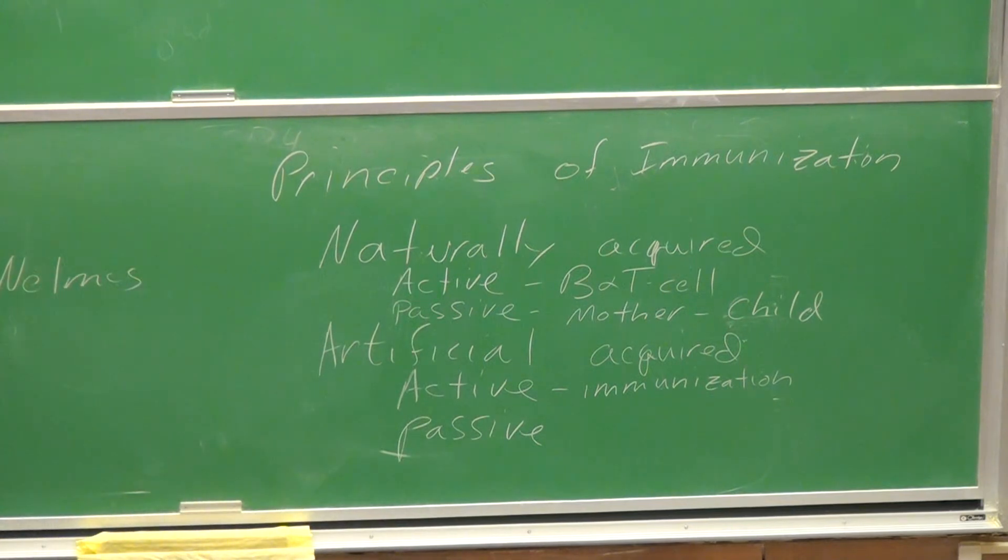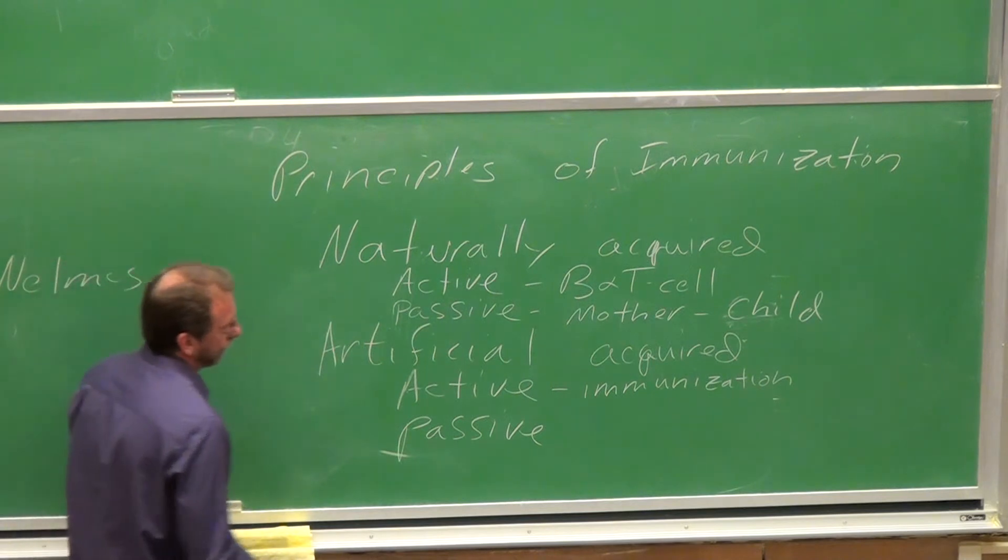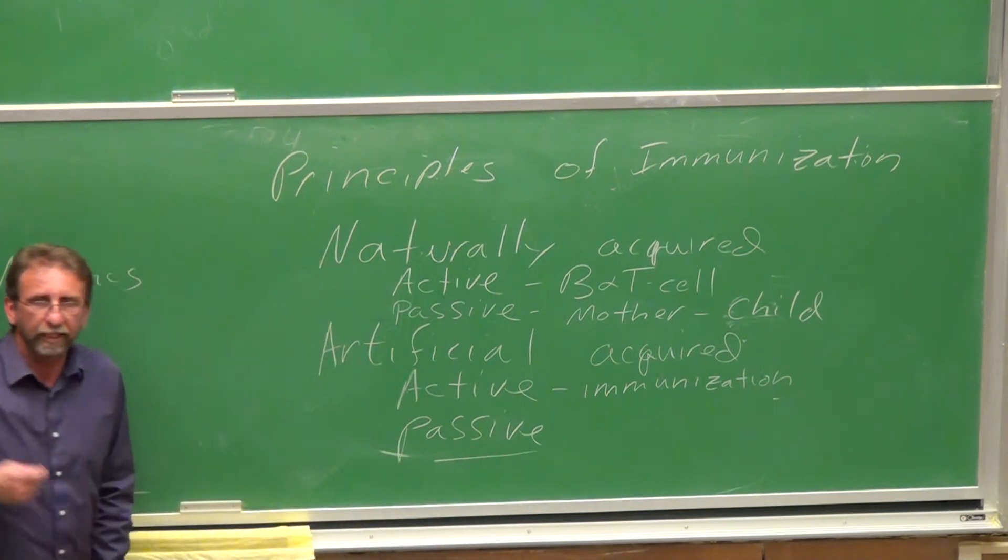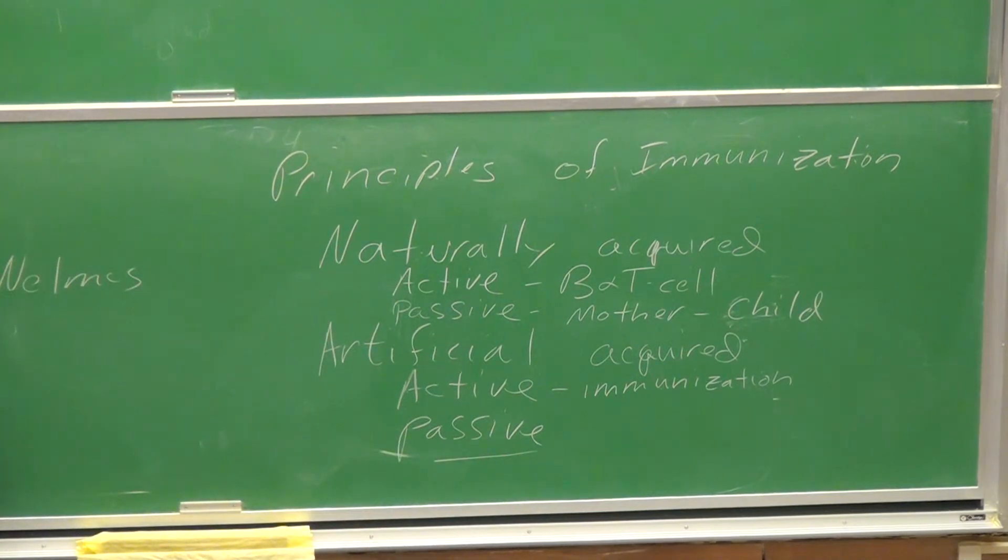And an artificial, passive immunity is one then where you are being given antibodies. The antibodies could be coming from, generally they're going to come from a serum, an anti-serum. Somebody else has produced them. Used to be other animals produced them.